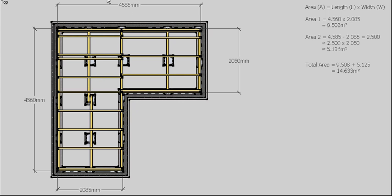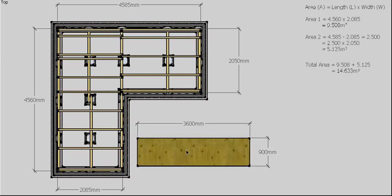The next thing I need to do is look at the sheet I'm going to use. The standard type sheet is 3.6 meters long and 900mm wide, so I have to work out the area each sheet is going to cover. 3.6 × 0.9 tells me that each sheet is going to cover 3.24 square meters of floor area. Now I know my total area and I know the area each sheet covers — all I have to do is divide those two. My total floor area of 14.633 divided by my sheet area of 3.24 tells me I need 4.516 sheets.